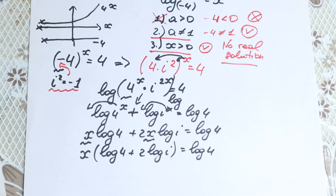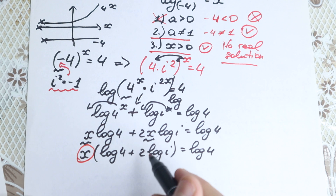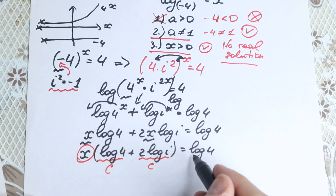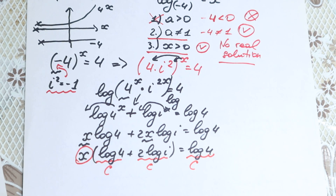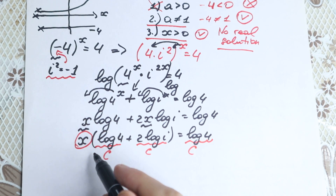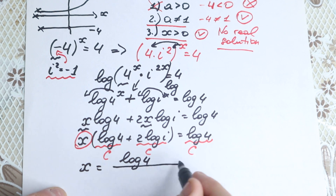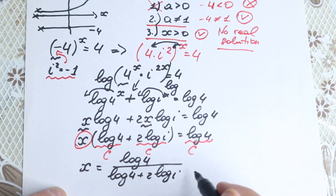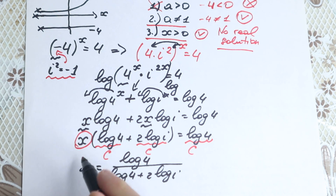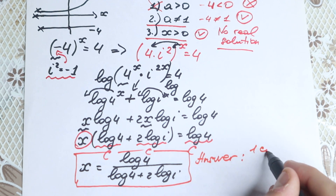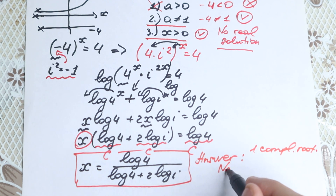Dividing both sides by (log 4 + 2·log i), we get x equals log 4 divided by (log 4 + 2·log i). This is our answer in terms of complex numbers — one complex root. And there are no real roots.